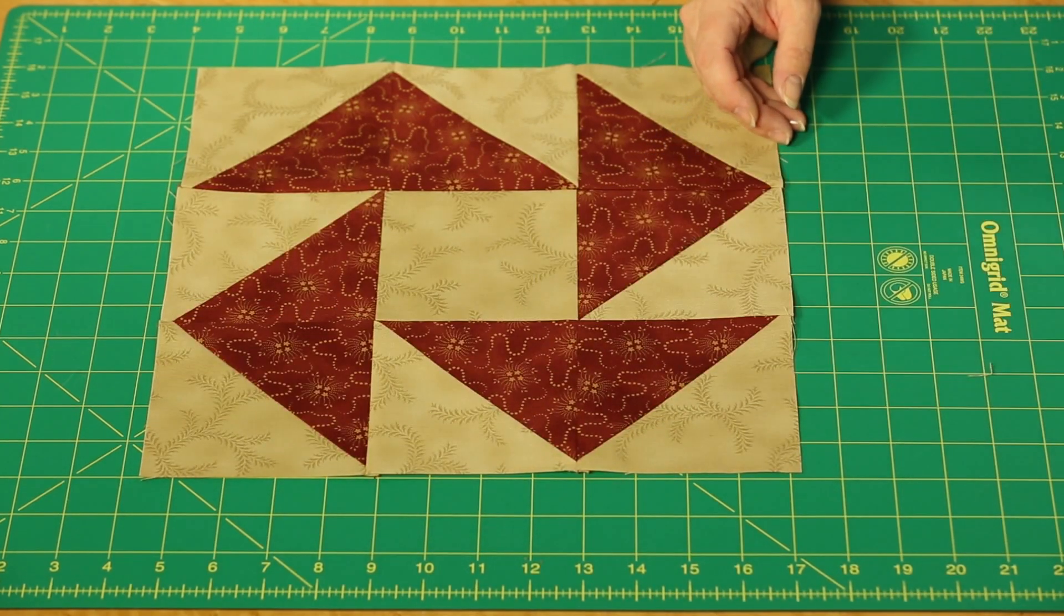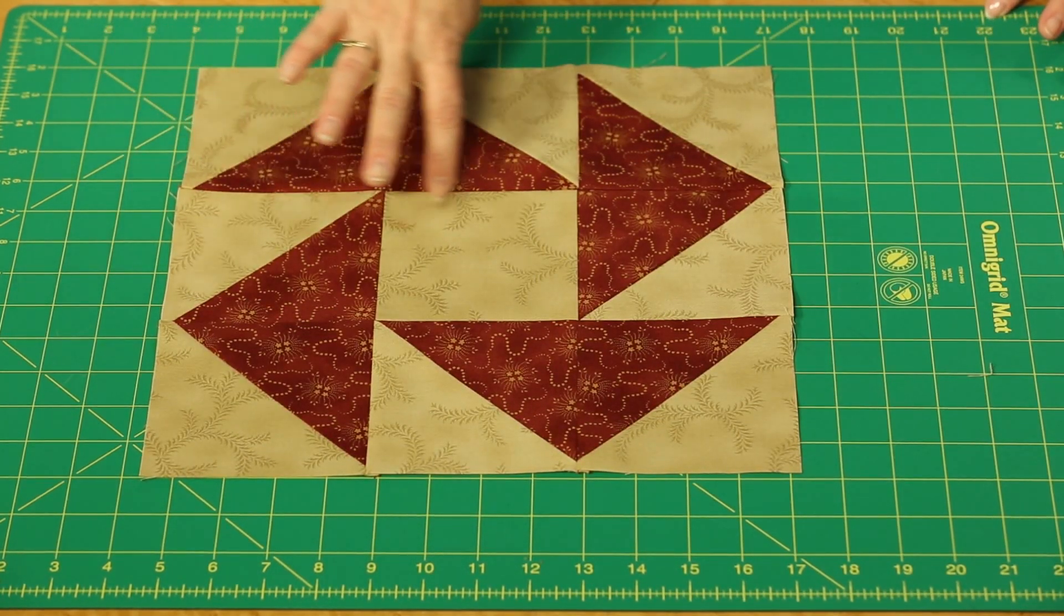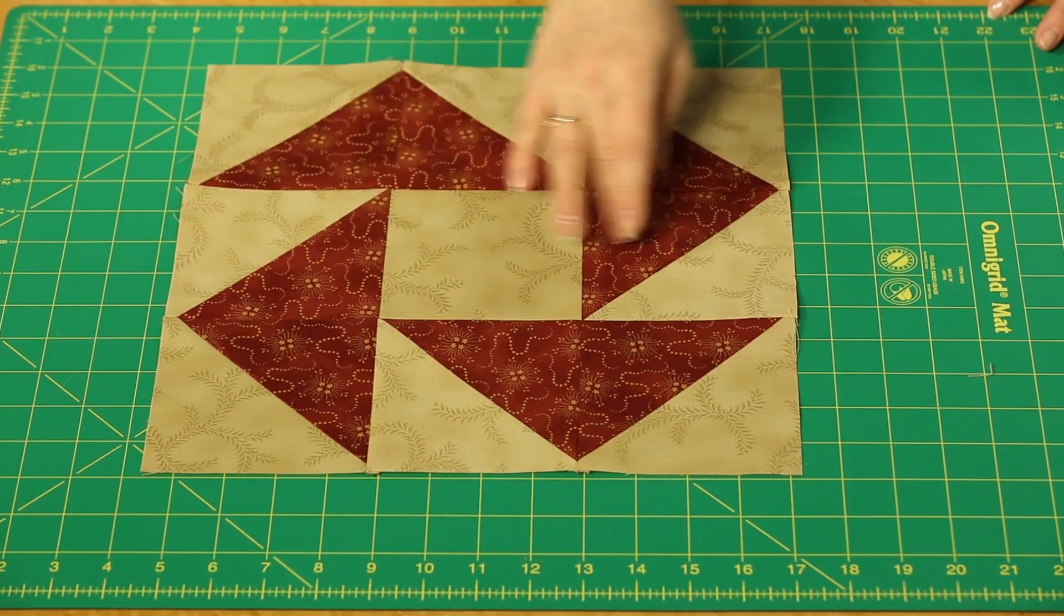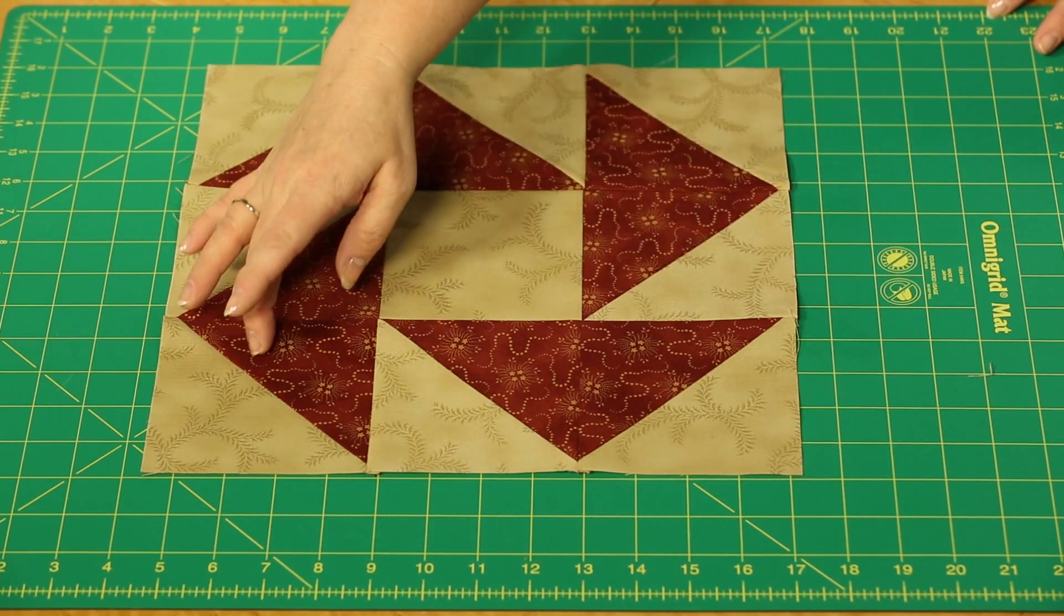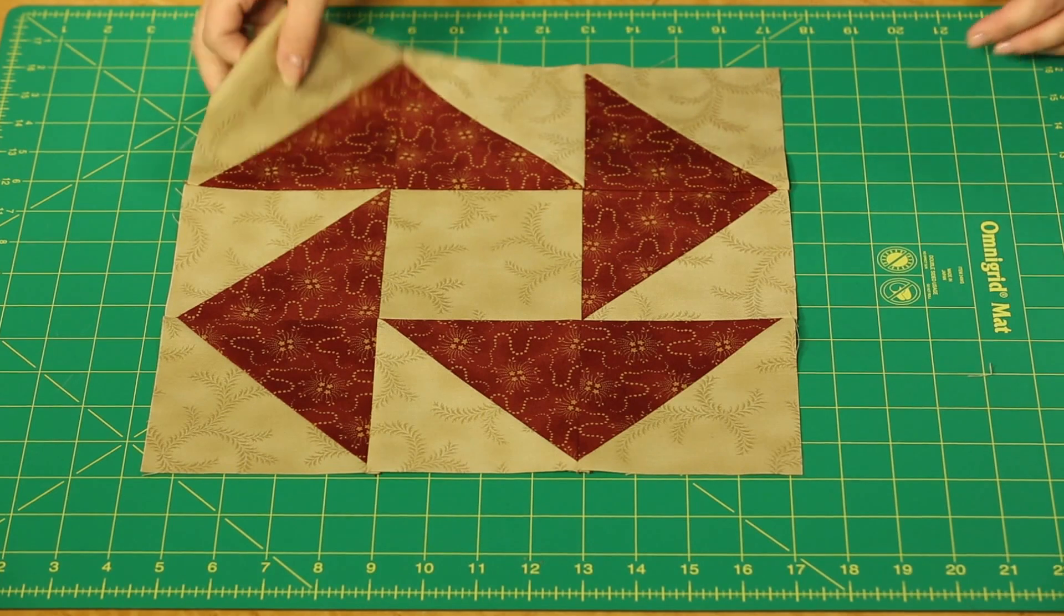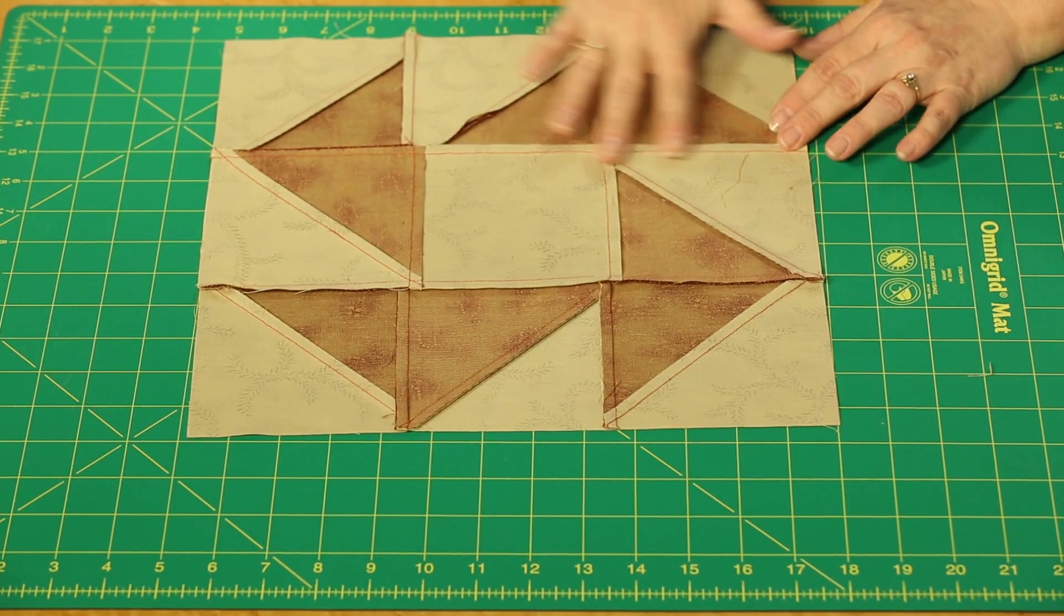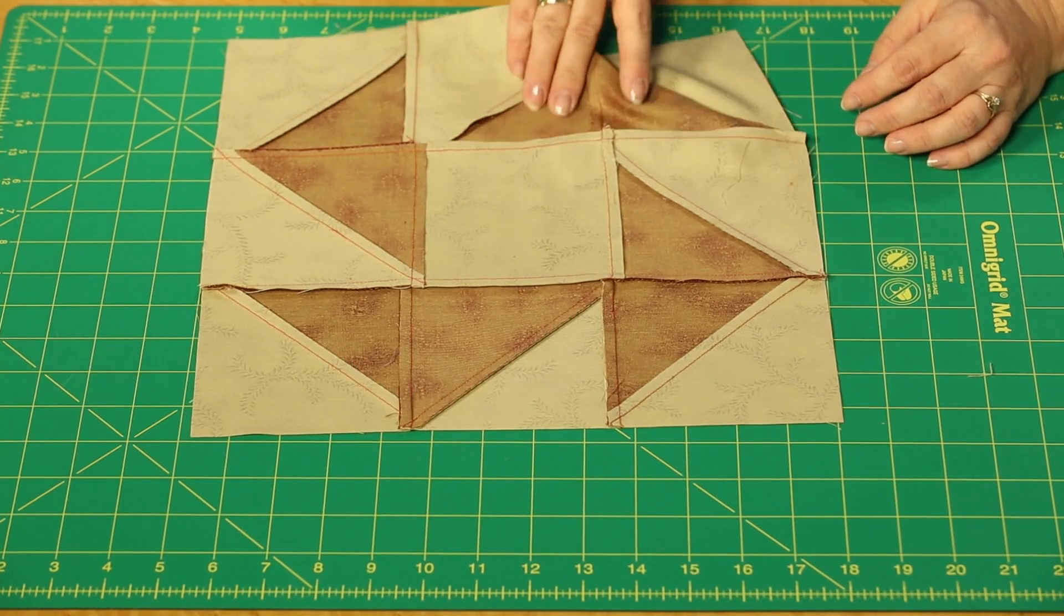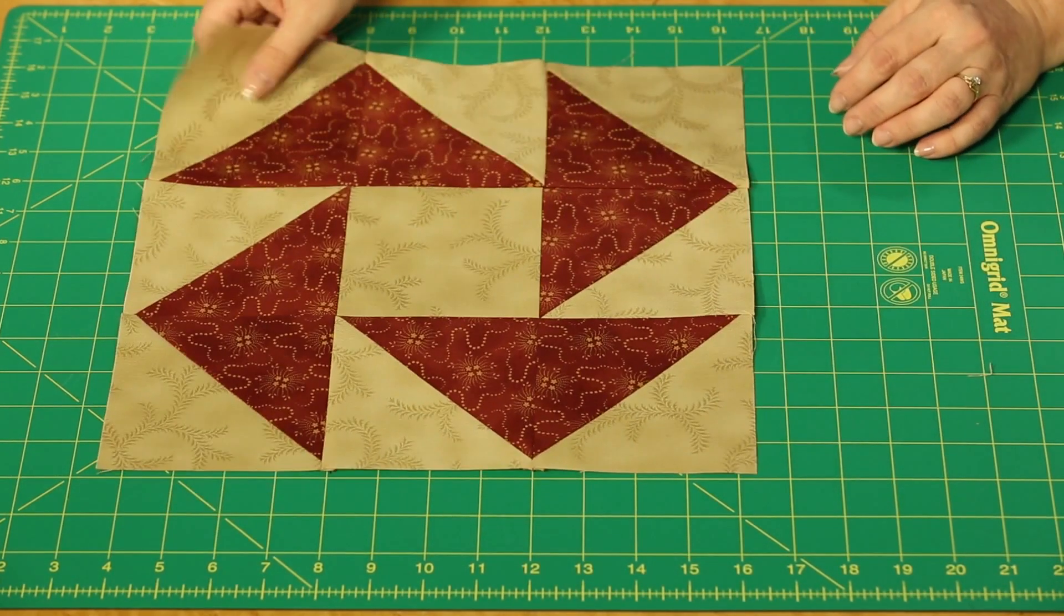And then it's simple seaming because this now is going to be joined as three blocks, one row, three blocks here, row two, three blocks here, row three. A simple nine-patch construction. And you can see on the back, press as you go, making sure that things, keeping things nice and neat and tidy will make your block turn out very nice.